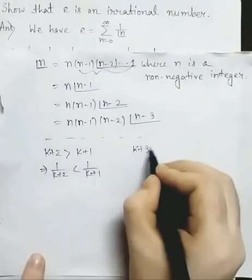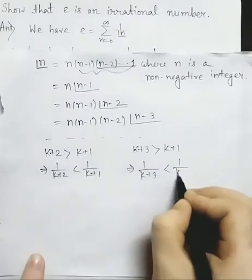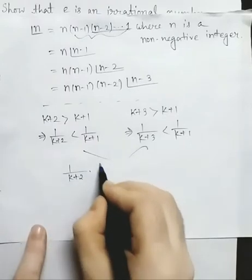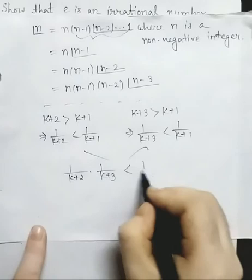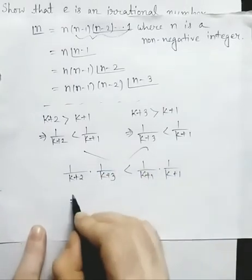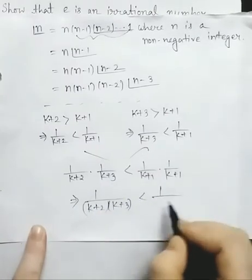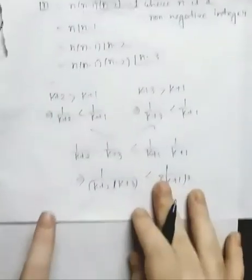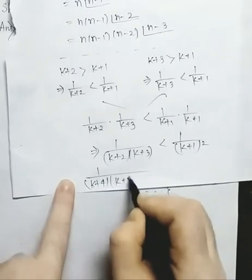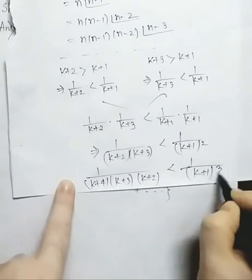Since k plus 2 is greater than k plus 1, this implies 1 by k plus 2 is less than 1 by k plus 1. Similarly k plus 3 is greater than k plus 1, so 1 by k plus 3 is less than 1 by k plus 1. From these two we can write 1 by k plus 2 into 1 by k plus 3 is less than 1 by k plus 1 squared. Similarly, 1 by k plus 4 into k plus 3 into k plus 2 is less than 1 by k plus 1 cubed, and so on.